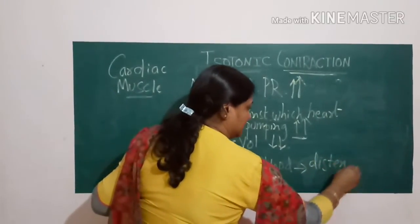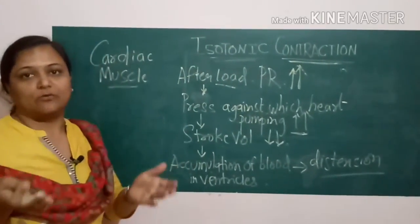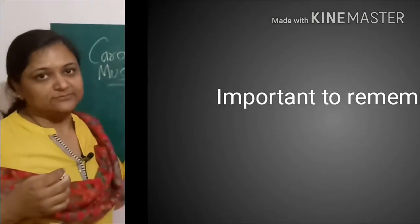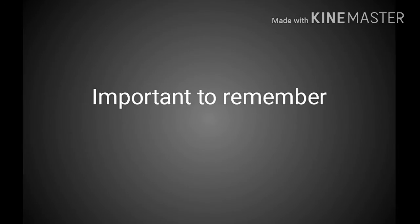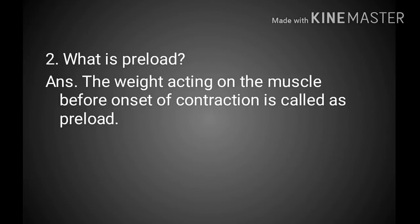Important points to remember: Define isotonic contraction — it is a type of contraction in which the tone of the muscle does not change and shortening of the muscle occurs, so external work is done. What is preload? The weight acting on the muscle before the onset of contraction is called preload.